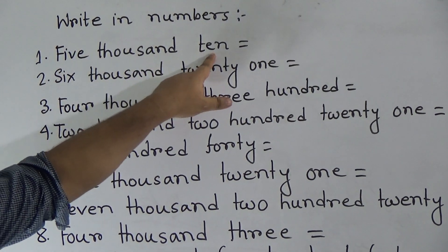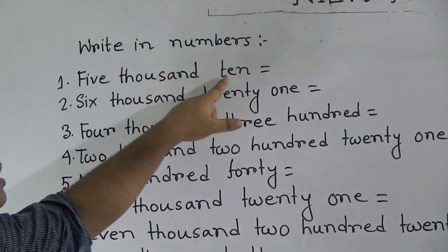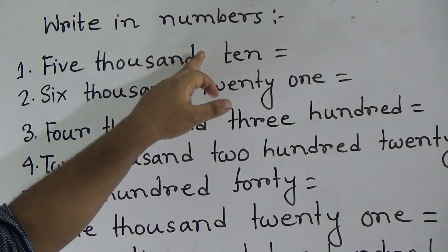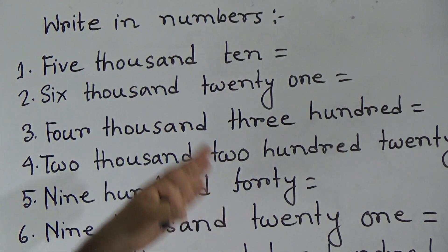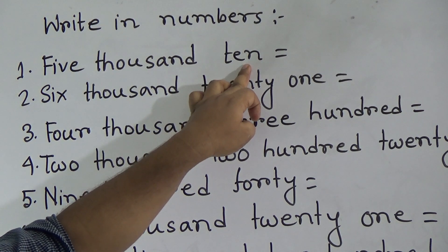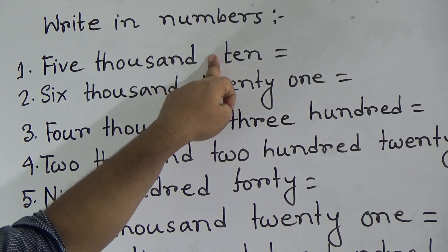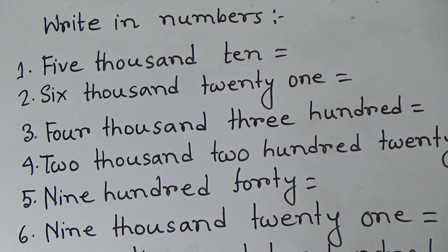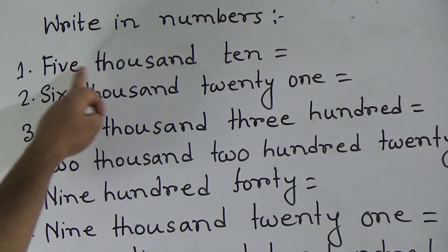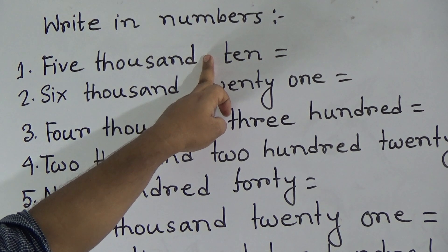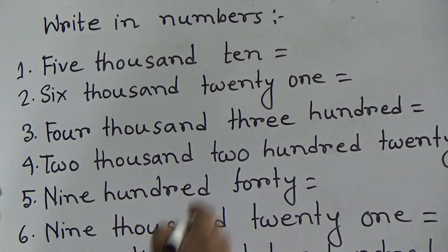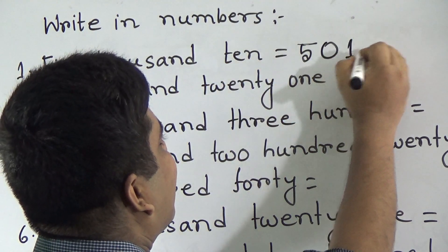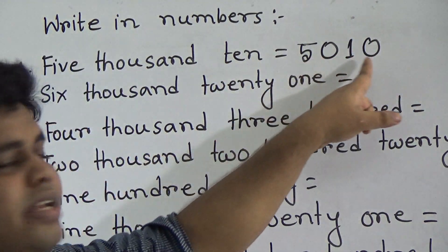Here, 5010. My dear student, please notice, if once place is absent, that means here 5010, that means here 100 place is absent. When a place is absent, then that place must be 0. Here, 5000 and 100 is absent. For this reason, we write 5, 0 and 10 and read as 5010.